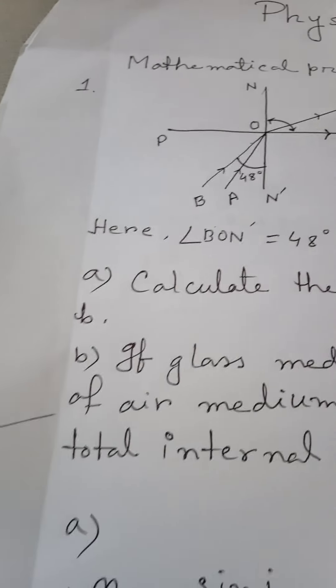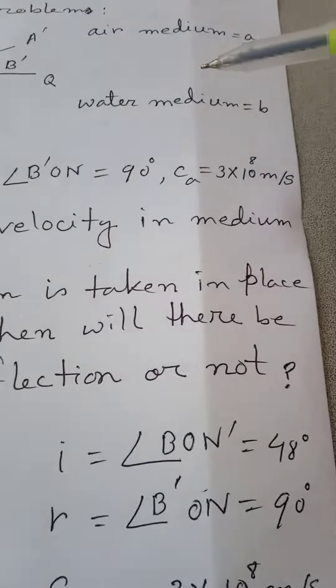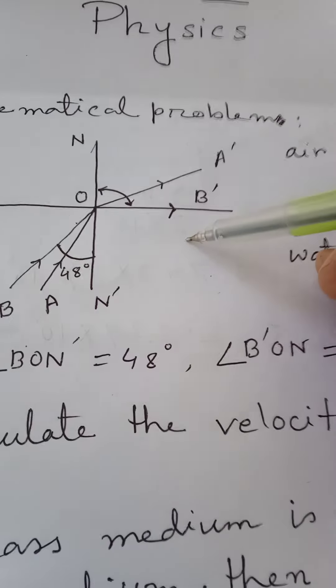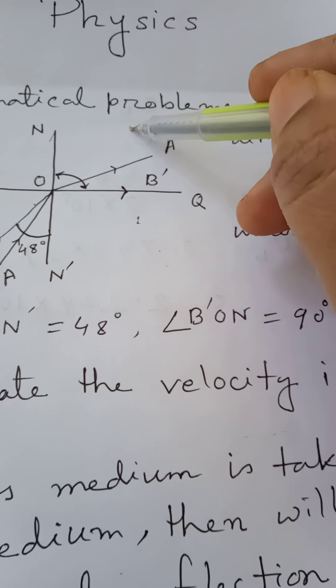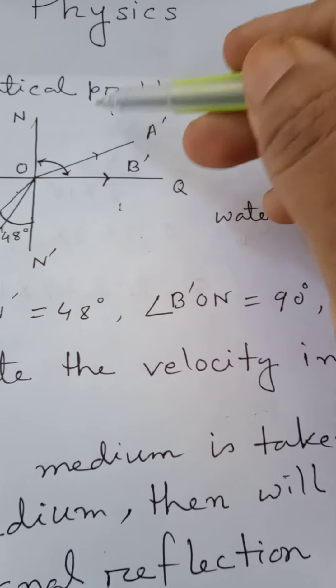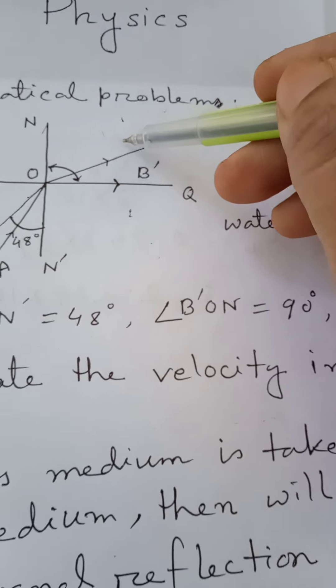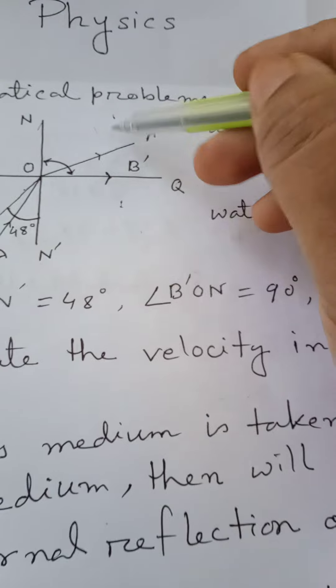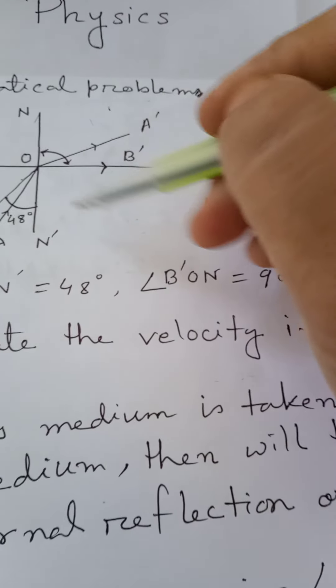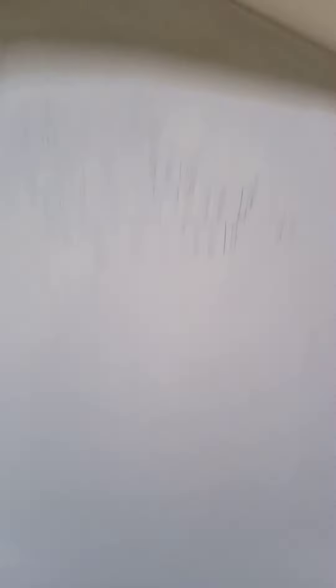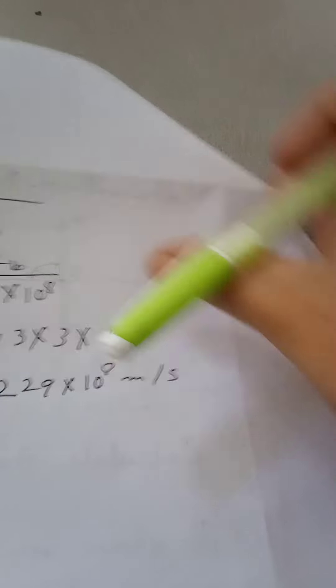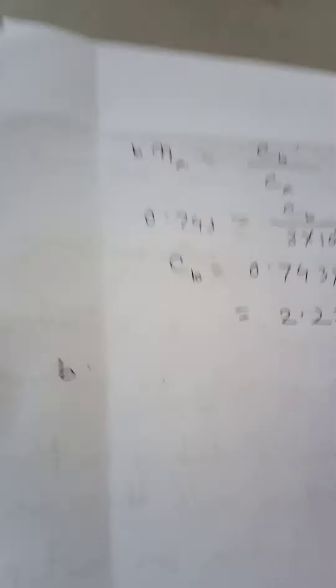For part B: if glass medium is taken in place of air medium — medium B is water and medium A is air — so if we replace air medium with glass medium, will there be total internal reflection or not? We have to find that out mathematically.